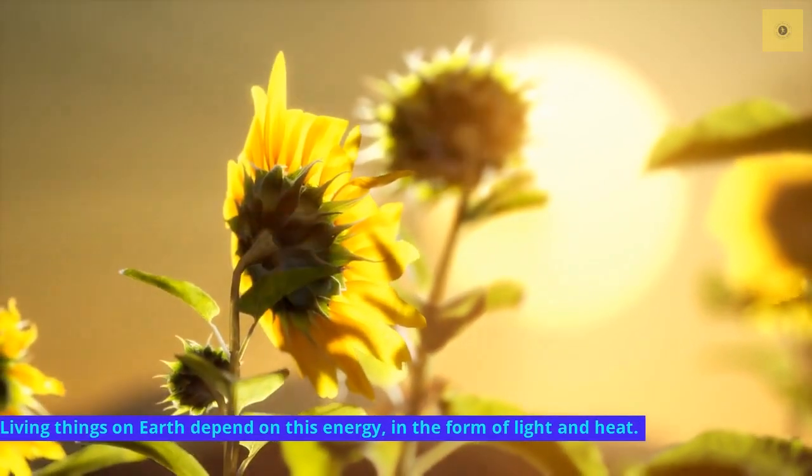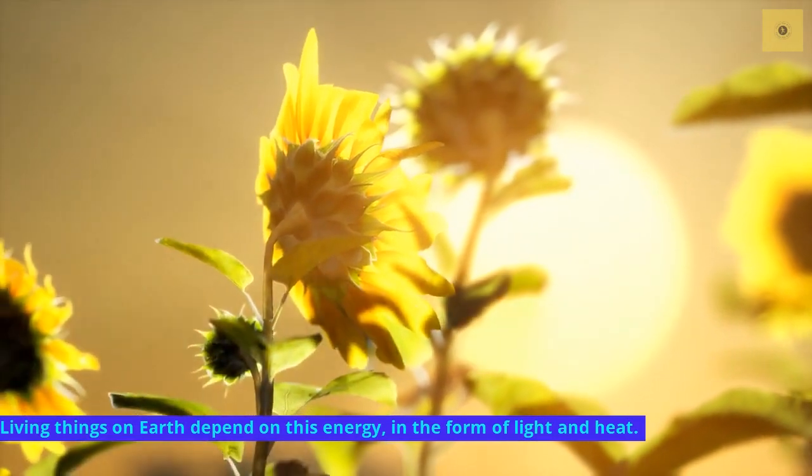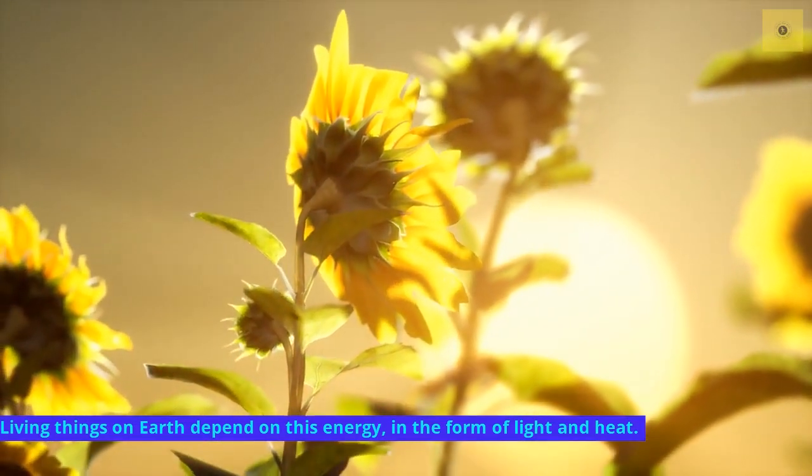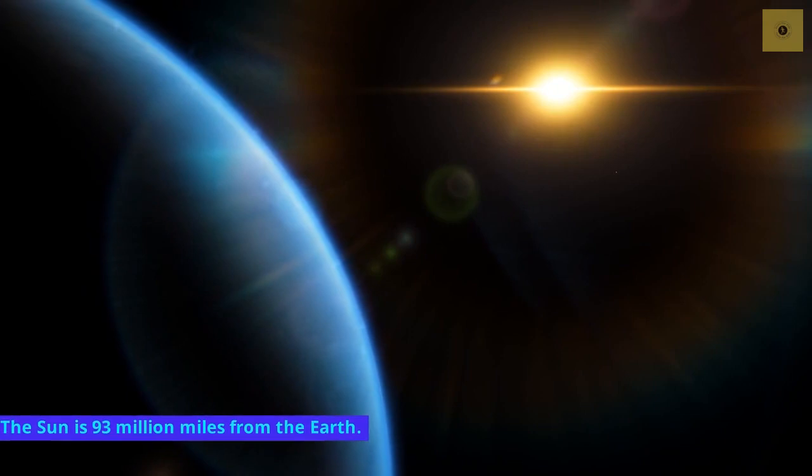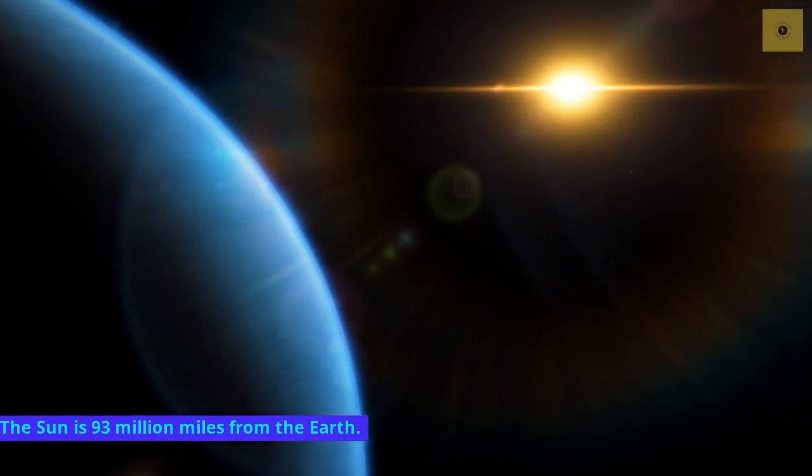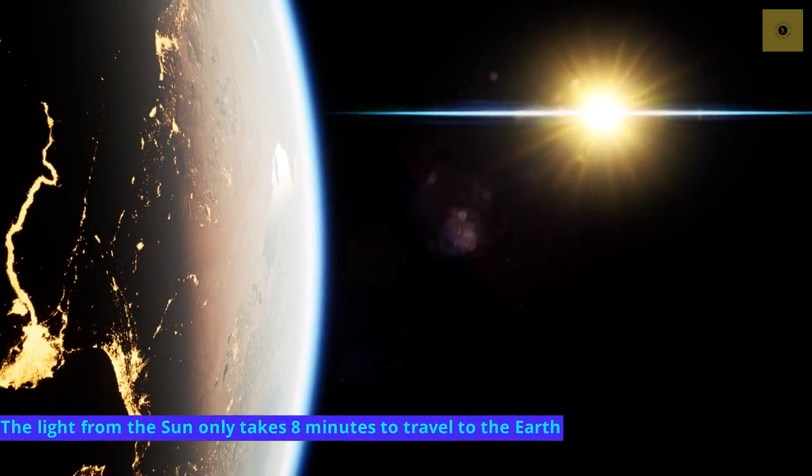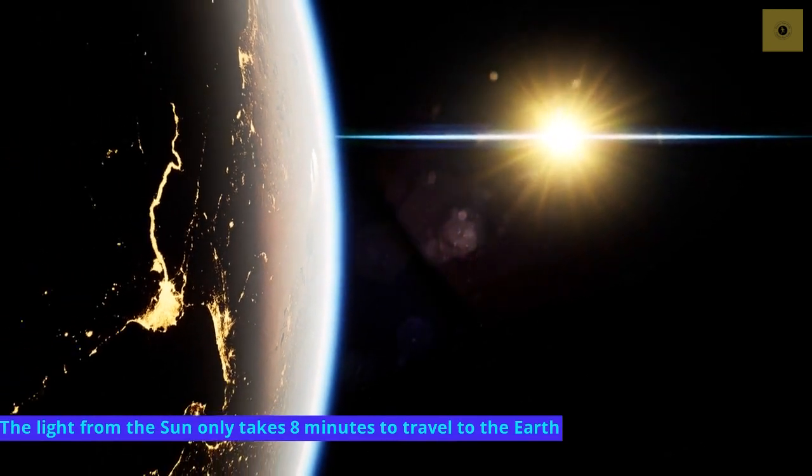Living things on Earth depend on this energy in the form of light and heat. The Sun is 93 million miles from the Earth. The light from the Sun only takes 8 minutes to travel to the Earth.